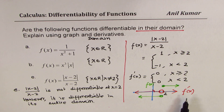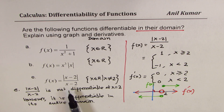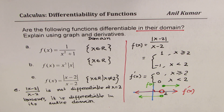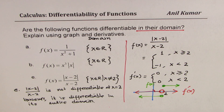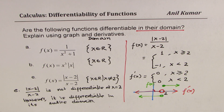It is differentiable in its domain, as you can see. Its derivative is 0 at all the points, and x equals 2 is not in the domain. Therefore, we can say that the statement is true. Now let's take up the examples for case A and B, finding derivatives and sketching the graph.